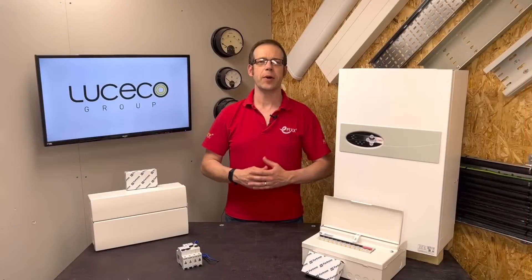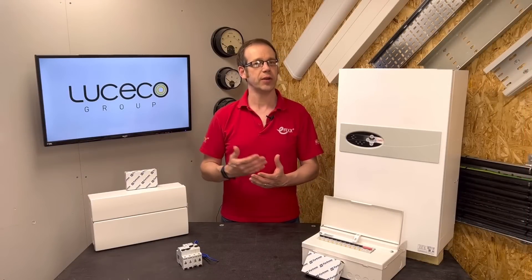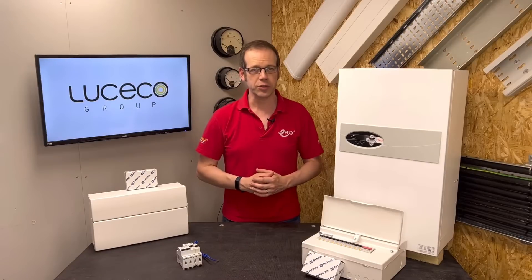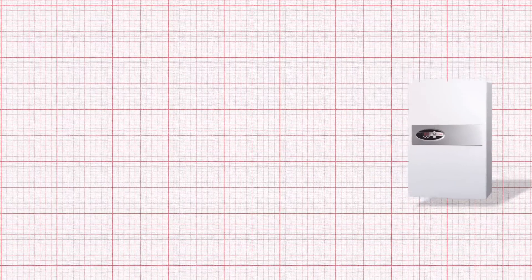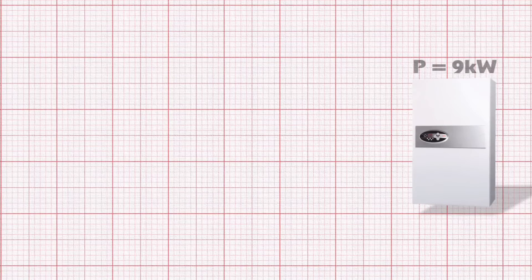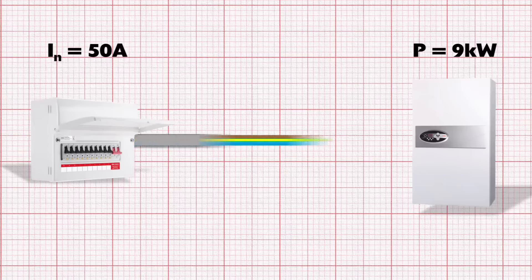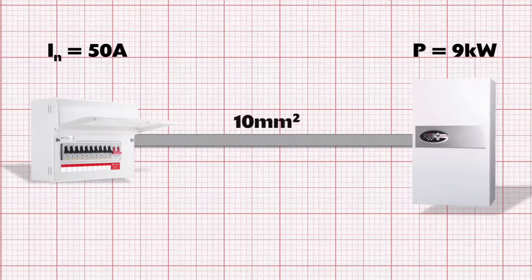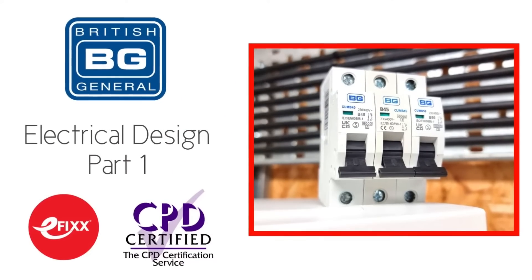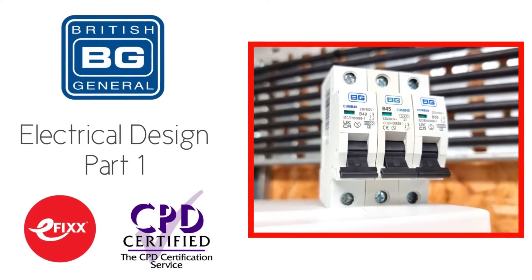As this is part two of the electrical design package, and it may have been a while since you looked at the previous one, we'll do a quick recap on the scenario and numbers we're working with. We're carrying out the design of an electrical circuit feeding a 9kW Fusion Comet Electric boiler from the Electric Heating Company. We're using a 50A Type-B MCB from the Fortress range by BG Electrical to protect the 10mm² twin and CPC cable. If you're interested in how we arrived at these values, please go and check out part one, as it will help your understanding of the next steps in the design process.